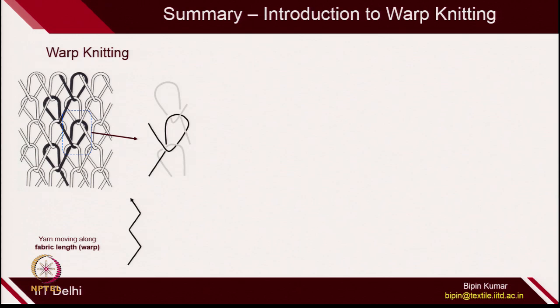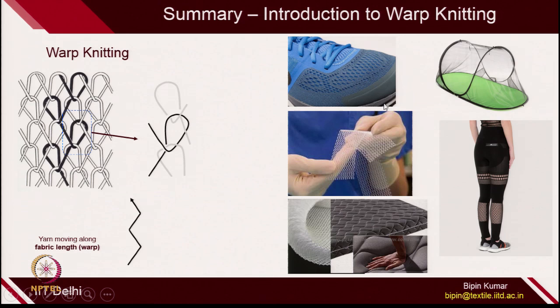The warp knit structure is highly porous compared to weft knitted structures. It can be used in many technical applications — in medical fields for mesh fabric, hernia repair, shoe knitting, mosquito net fabrics, cushioning applications, and also in garmenting. There are many applications of warp knitted structures, and you may follow other literature to explore further.